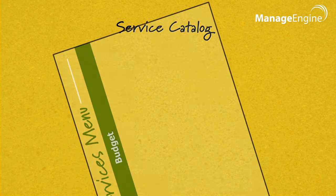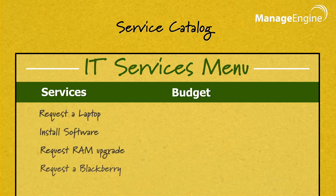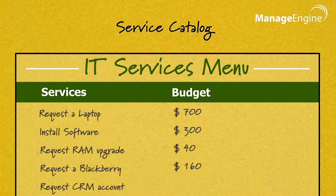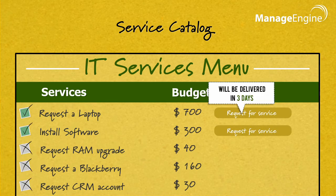Service Catalog is a menu card offered by the IT department, defining what services the users can order and the budget allocated for it. Along with defining what's available, it also helps in delivering the service as agreed upon time.